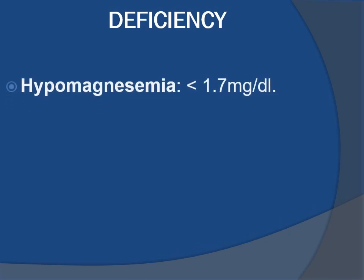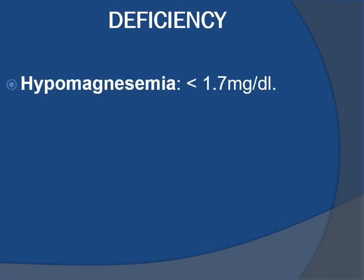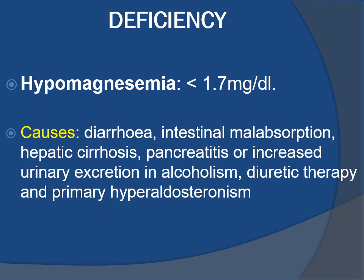Deficiency of magnesium occurs when magnesium concentration falls below 1.7 milligrams per deciliter. Causes of deficiency include diarrhea, intestinal malabsorption, hepatic cirrhosis, pancreatitis, or increased urinary excretion in alcoholism, diuretic therapy, and primary hyperaldosteronism.